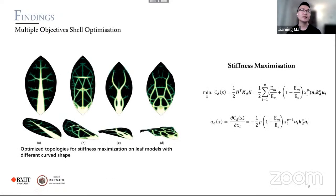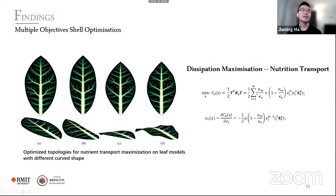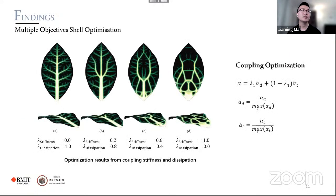Since real plant leaves normally have curvatures on their surface and gravity is not perpendicular to the leaf surface, optimization considering only stiffness can yield quite different results for leaf models with varying curvatures. Our results show optimized structures are quite sensitive to curvature variation. However, for dissipation optimization — corresponding to nutrition transportation — the hierarchical patterns are quite similar for either flat or curved models.